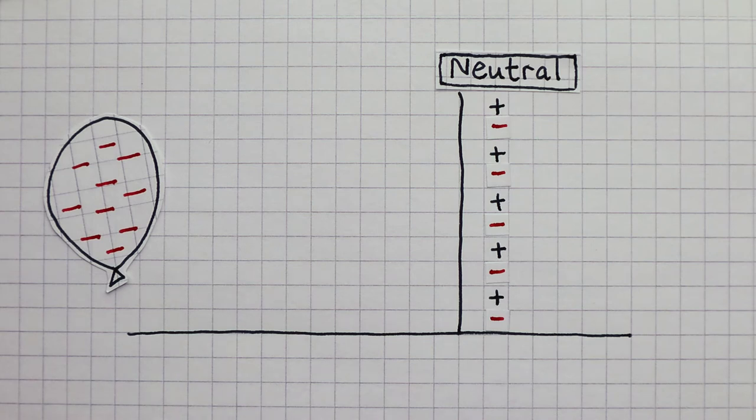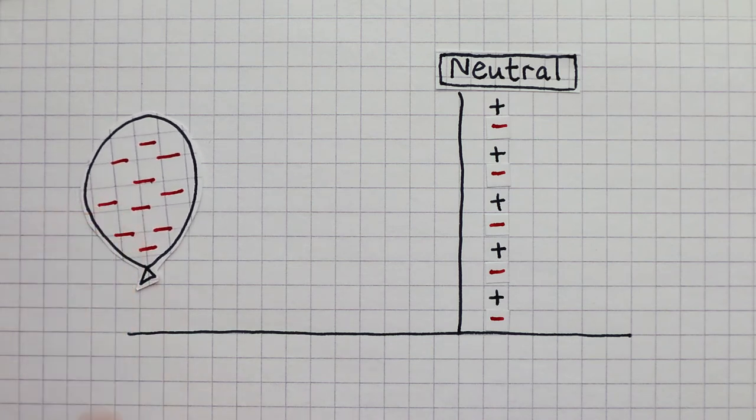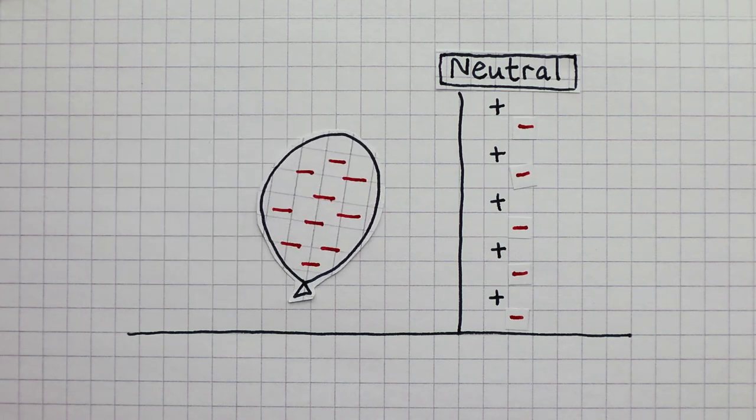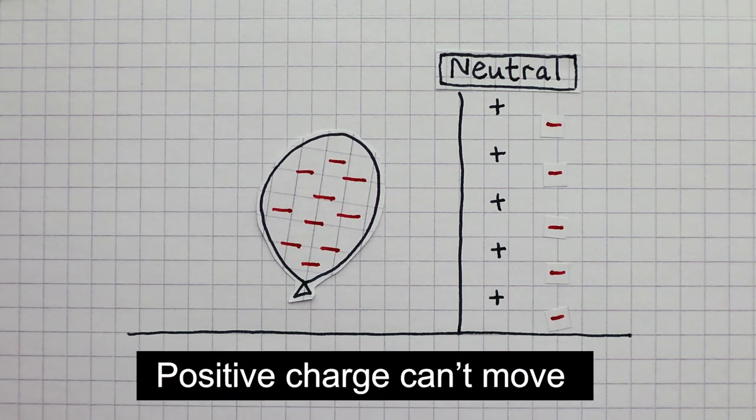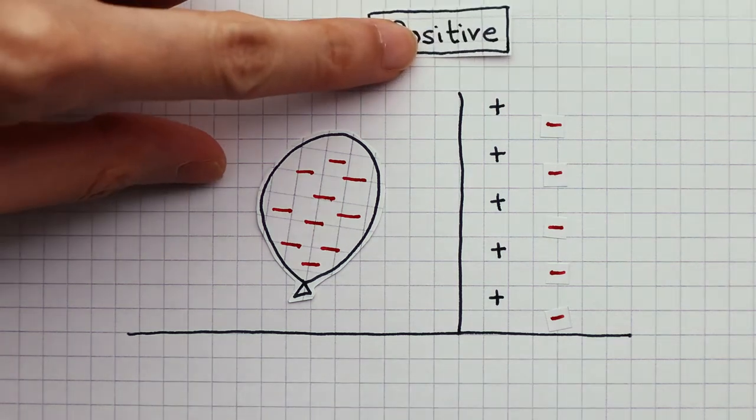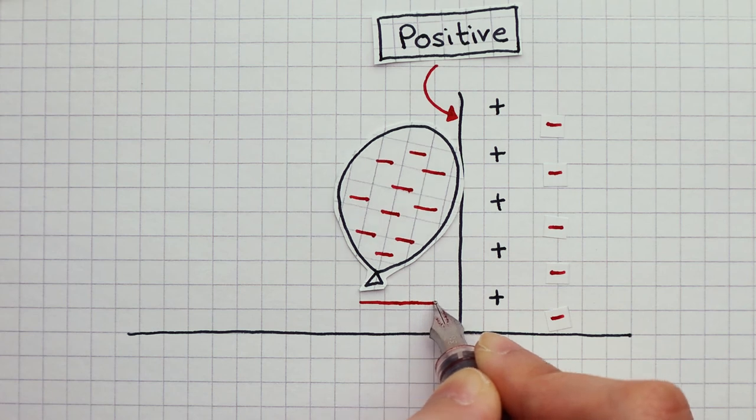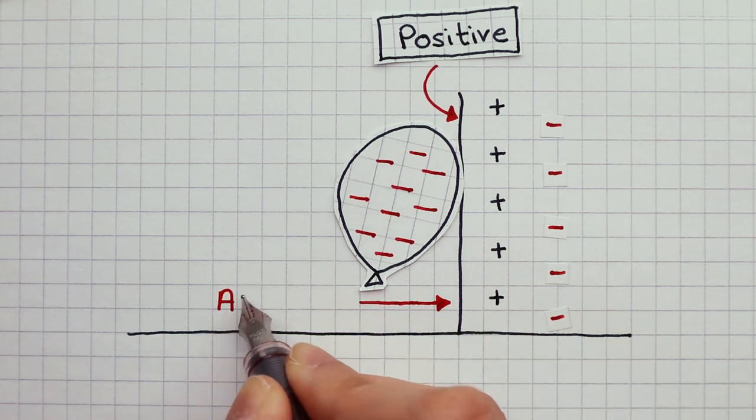For example, here I have a balloon and a wall. When I bring the balloon near the wall, some of the negative charge gets repelled from the edge of the wall. This gives the surface of the wall a small positive charge that's going to attract the negatively charged balloon.